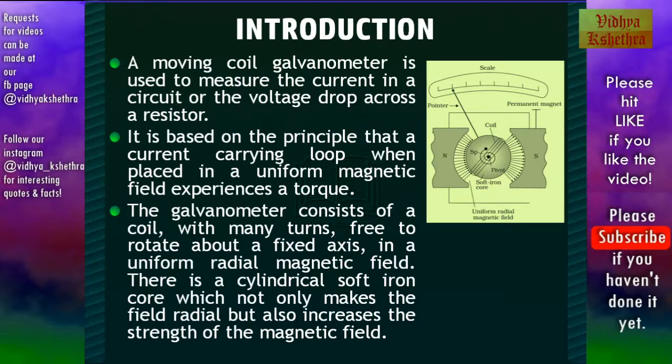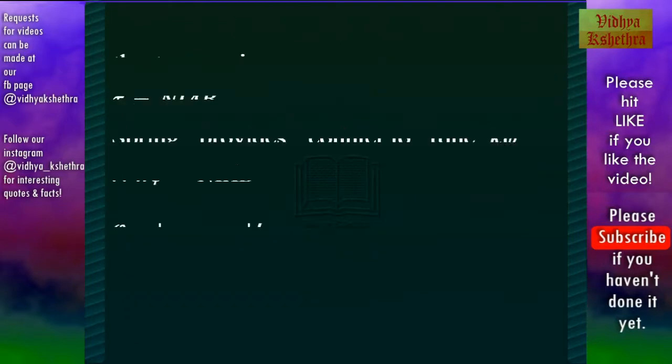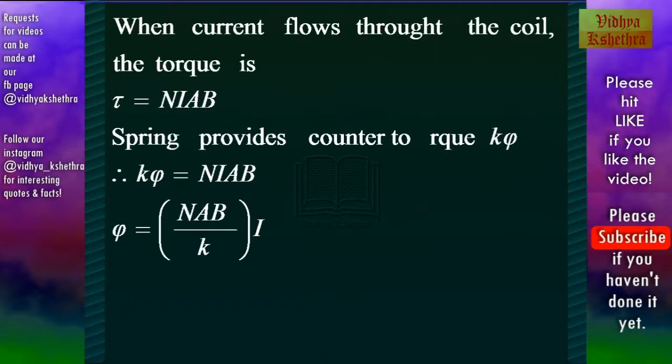Now in this magnetic field if a current passes through the coil, then the torque experienced τ is given by n·i·a·B where n is the number of turns of the coil, i is the current flowing through the coil, a is the area of the coil and B is the magnetic field intensity.